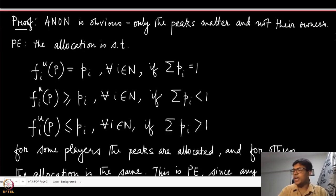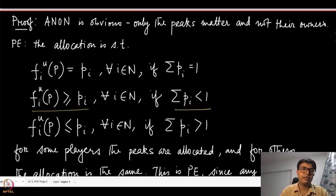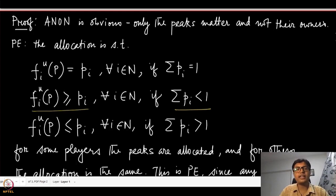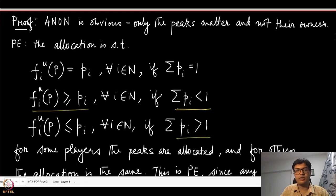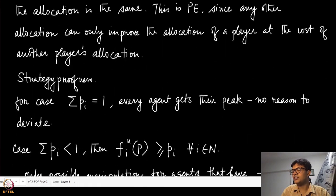Pareto efficiency was discussed in the previous module. Whenever we have a Pareto efficient allocation, when the sum of peaks is less than one, every agent must be overloaded or at least receive their peak. There should be no situation where someone is overloaded and someone else is under-loaded, as that would not be Pareto efficient. Similarly, when the sum of peaks is more than one, each agent receives at most their peak. Therefore this mechanism is Pareto efficient.